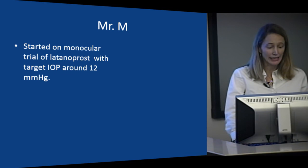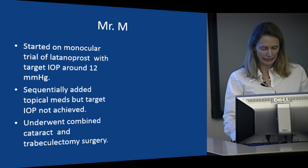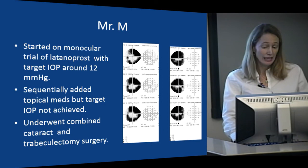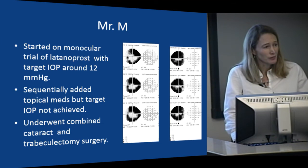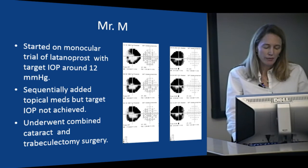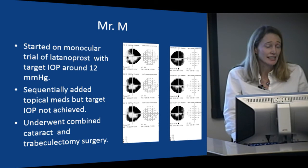Getting back to our patient Mr. M: unfortunately he has advanced glaucoma. He was started on a monocular trial of latanoprost with a target pressure around 12, and multiple medications were sequentially added to try to reach that target, but we weren't able to get there. So ultimately he underwent combined cataract and trabeculectomy surgery. In subsequent years his vision loss has stabilized, but we can't get back what he lost. He has lost his central acuity in the right eye due to a visual field defect involving fixation, with significant limitation in the left eye as well.